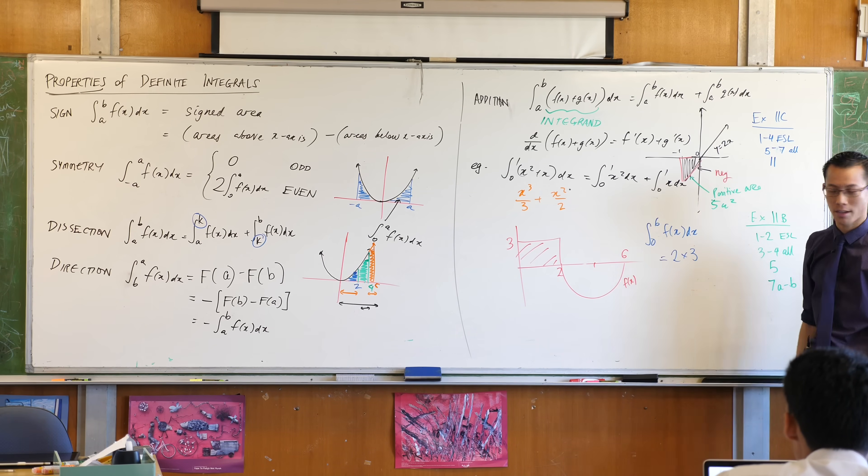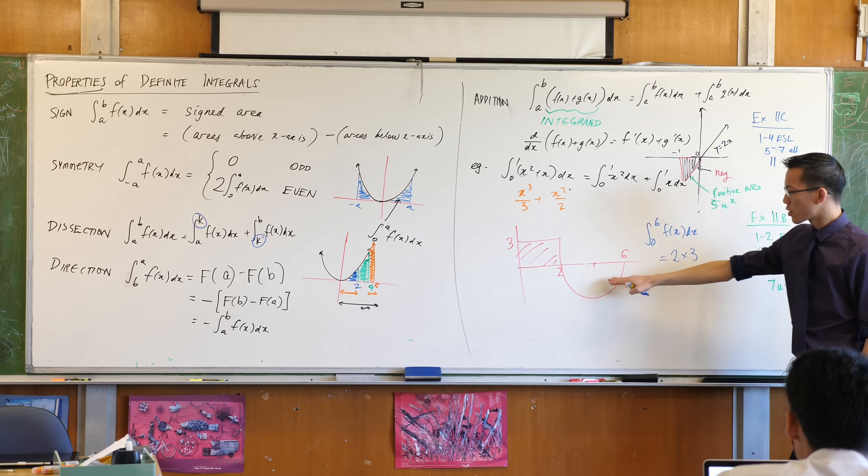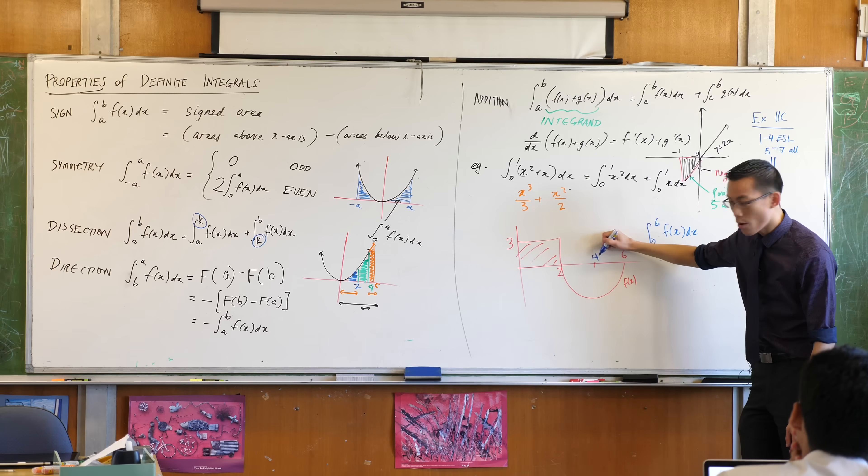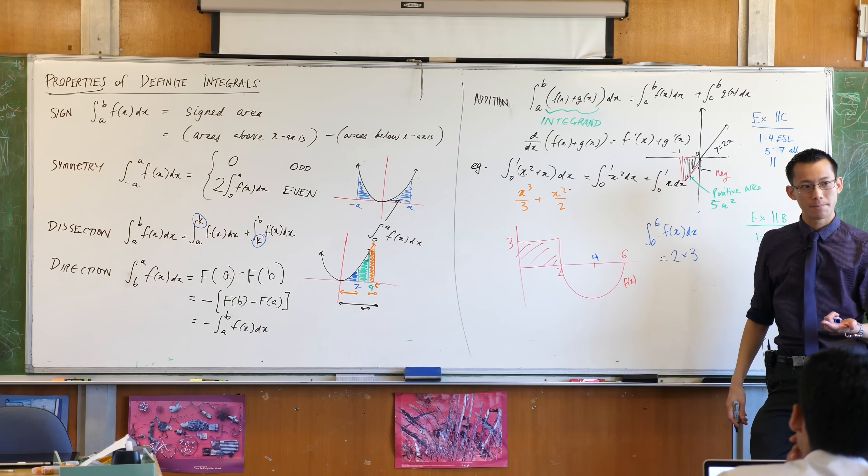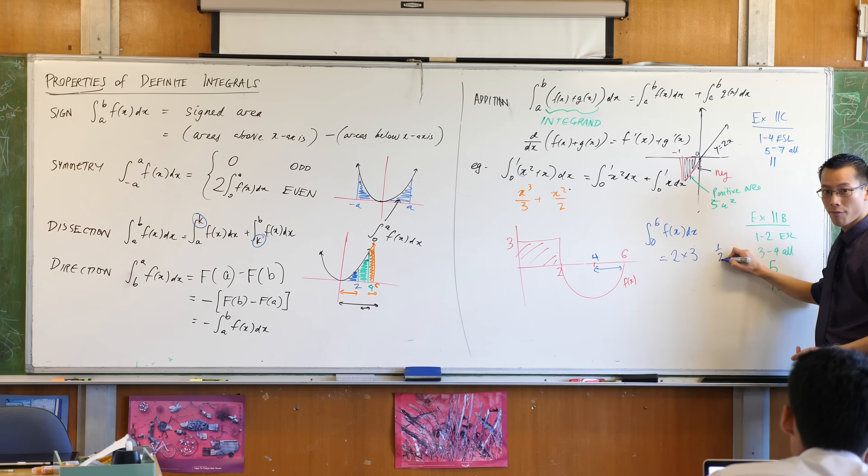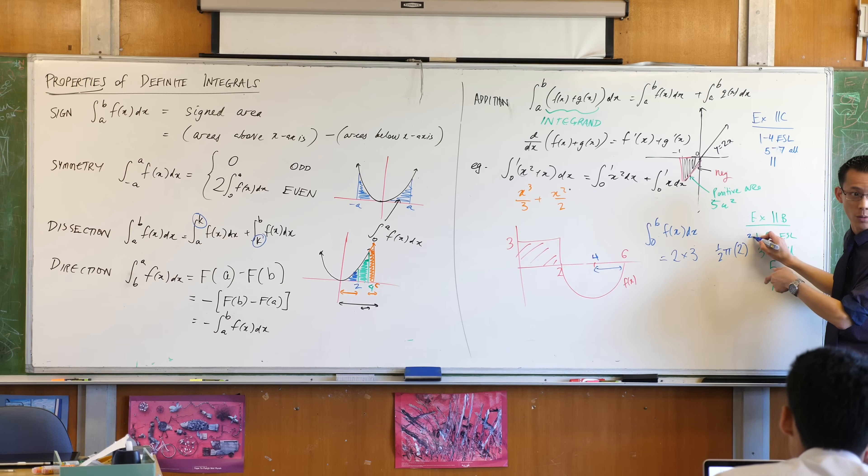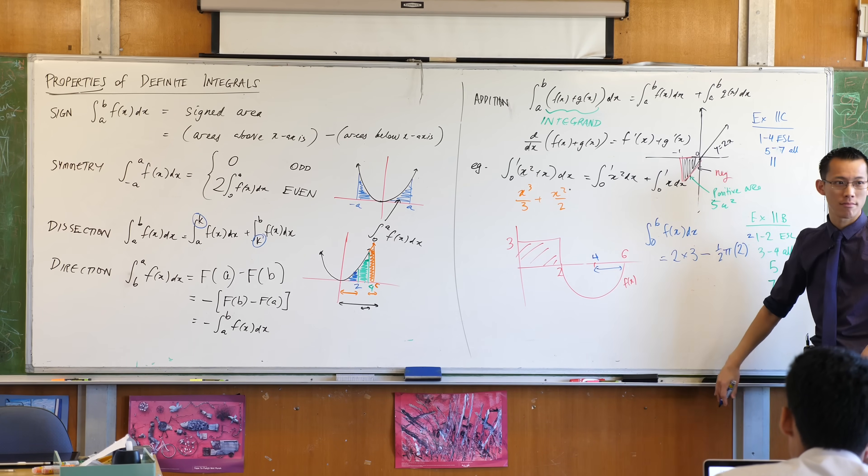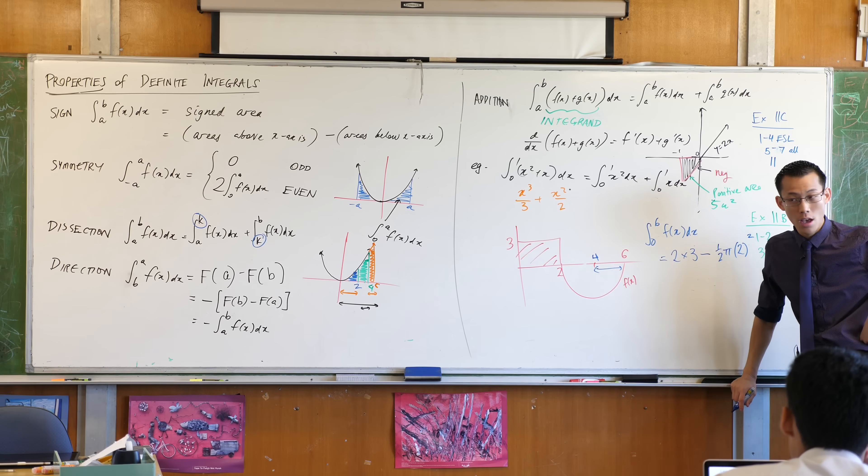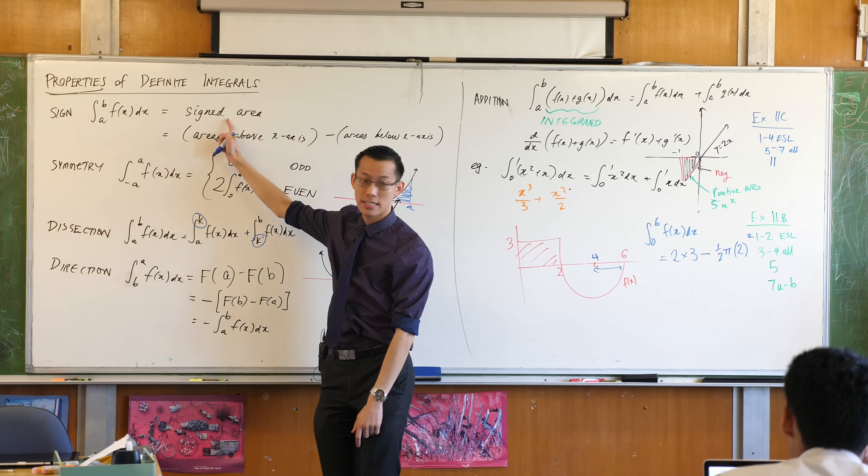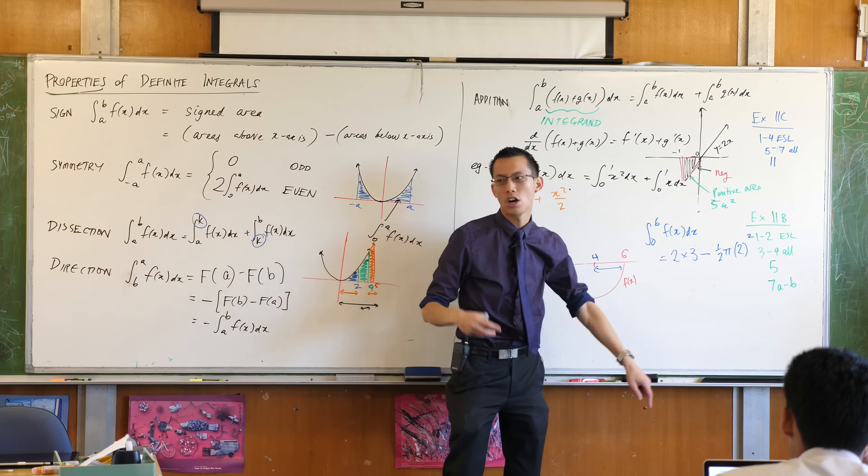Then you've got this guy which is a semicircle. That center there would be four, which makes its radius two. So because it's a semicircle I would say a half pi r squared, that's the area of a semicircle. But of course, look at where the semicircle is. It is beneath the x-axis. So because the question has said tell me what the integral is, now you pay attention to position.